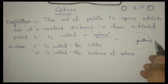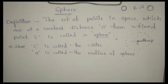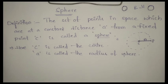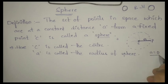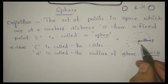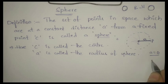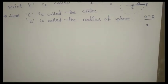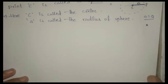Here, C is the center and 'a' is the radius of the sphere. If the radius of the sphere a equals zero, then we call that sphere a point sphere. If the radius is zero, we get simply a point, so we call it a point sphere. Now let us learn about the equation of the sphere.